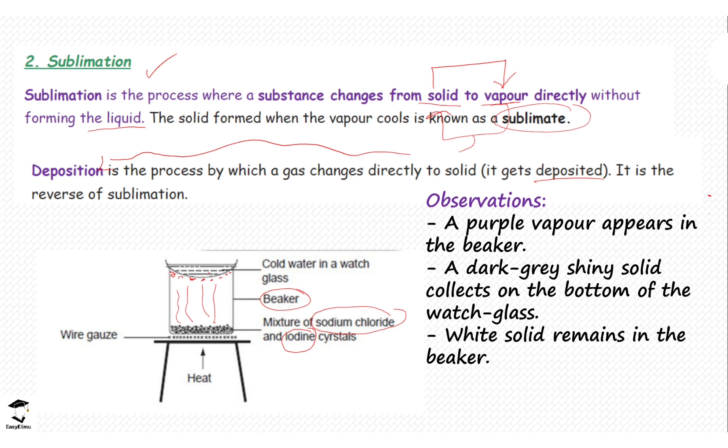The observations for this experiment: you see a purple vapor going up in the beaker, and then some dark gray shiny solid collects on the bottom of the beaker because this is the iodine that has been deposited. And then a white solid remains in the beaker, which is our sodium chloride.